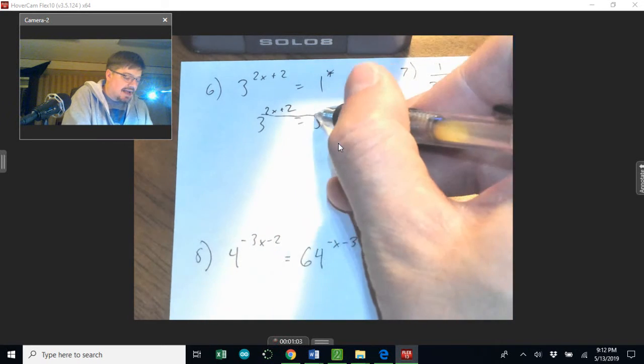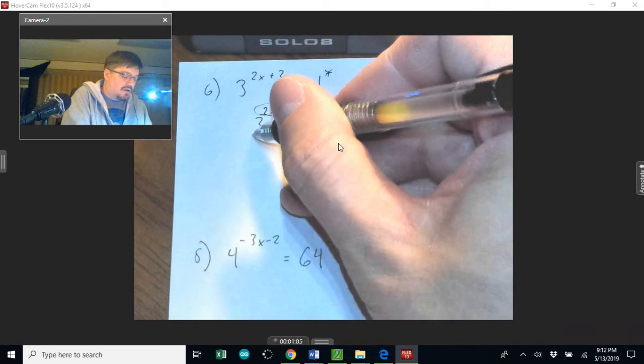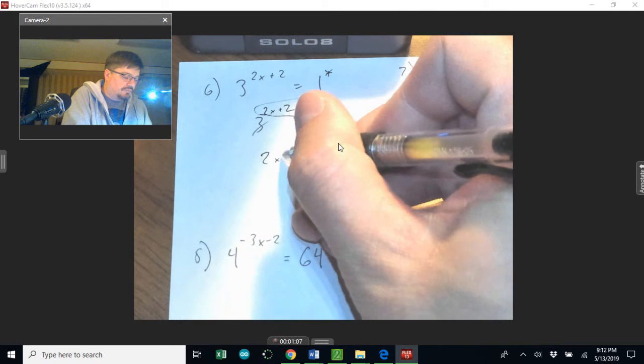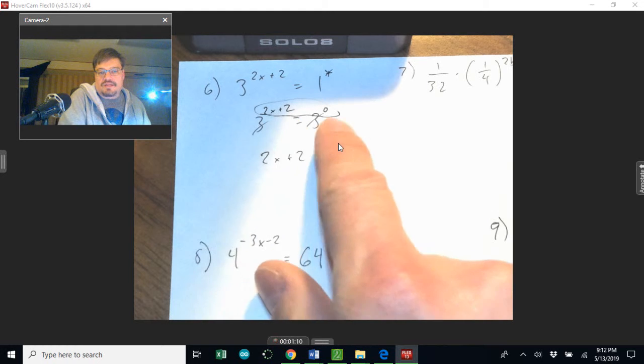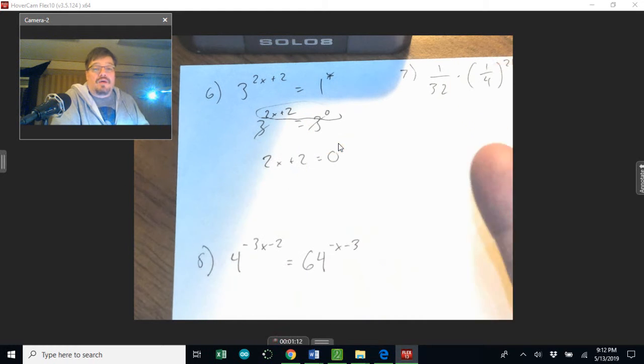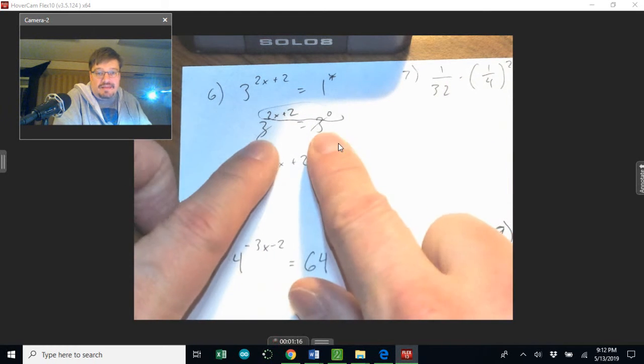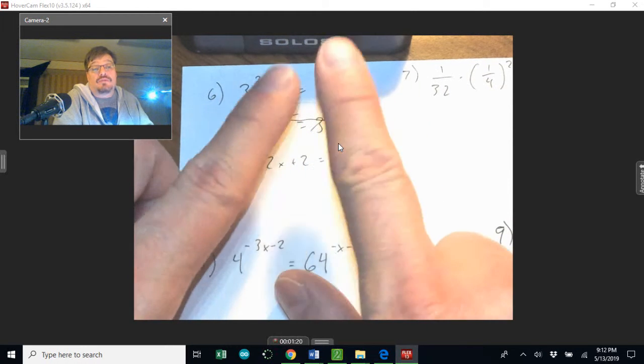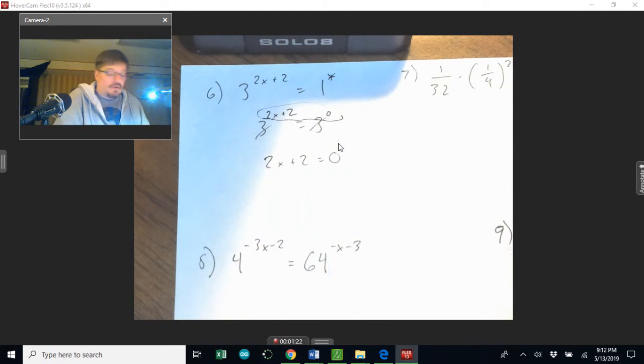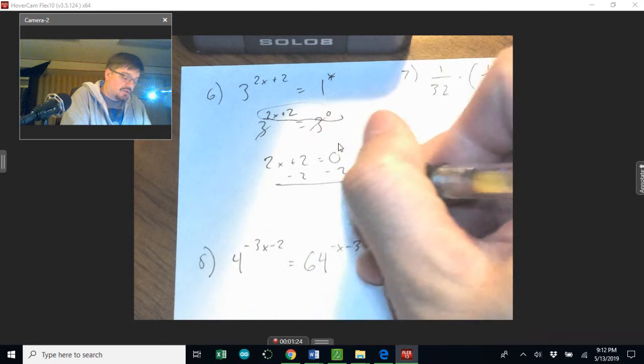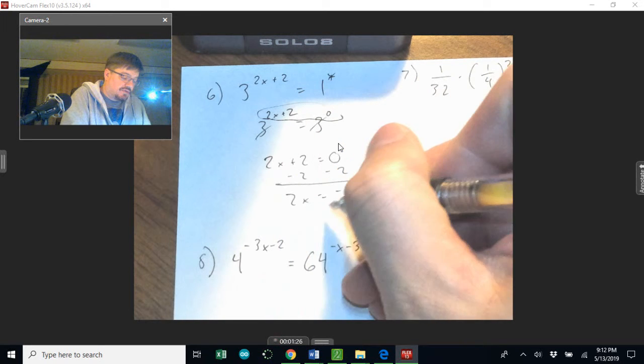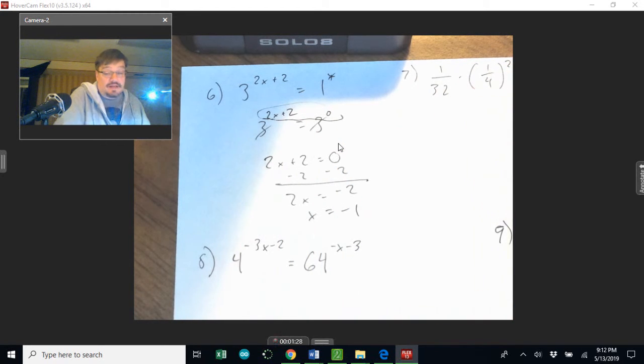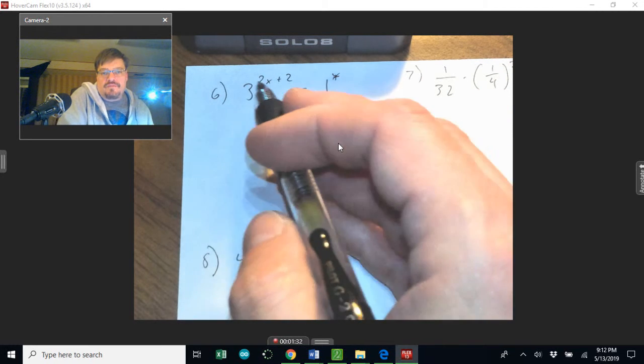So therefore what I can do is manipulate this so that these guys now have the same base. I can cross those out and just focus on the exponents, because what I did is I made all things equal. When the bases are the same, I can just focus on the exponents. So I subtract 2 from both sides, I get 2x equals negative 2, divided by positive 2, I get negative 1. So that's my final answer.